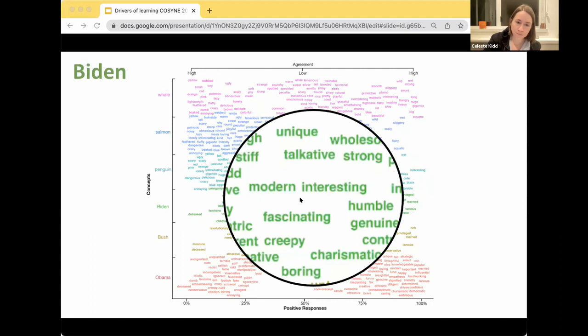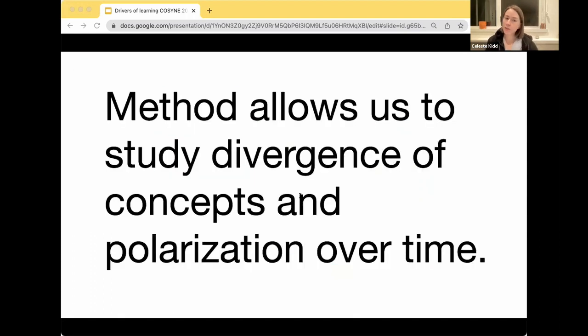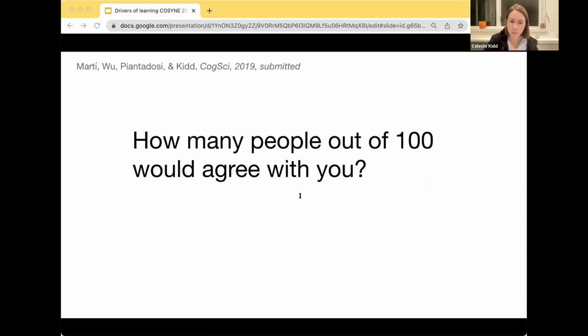Okay, so this method allows us to study divergence of concepts and polarization over time. This work is new and we think it has a lot of potential for investigating, for example, things like how media coverage or formal instruction could impact conceptual alignment across people. I'm hoping to do a lot of interesting follow-up work using this method now that we have a way of studying alignment in a way that gives us information about the features. As part of this work, we weren't just interested though in the absolute number of concepts and how they varied. We're also interested in, given that there's this diversity, do people know that this diversity exists?